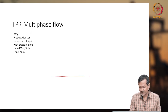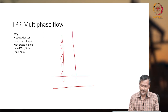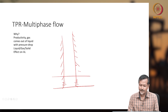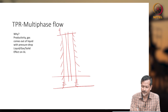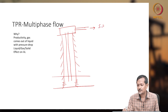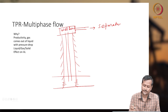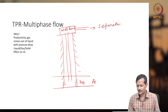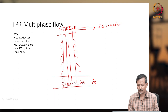Let us say one reservoir is here and I have one wellbore, which is cemented. Then I have perforated here. I have one tubing going to the reservoir and then this is the wellhead. From the wellhead you are getting your production, which will go to the separator. The reservoir pressure is PR, the sand face completion pressure is PWFS, and the flowing pressure is PWF.